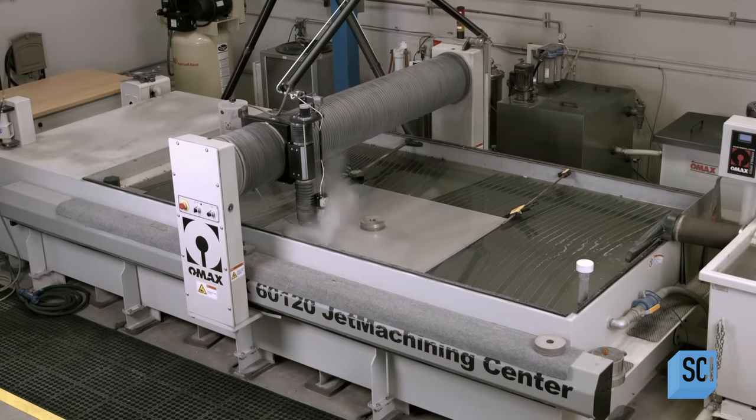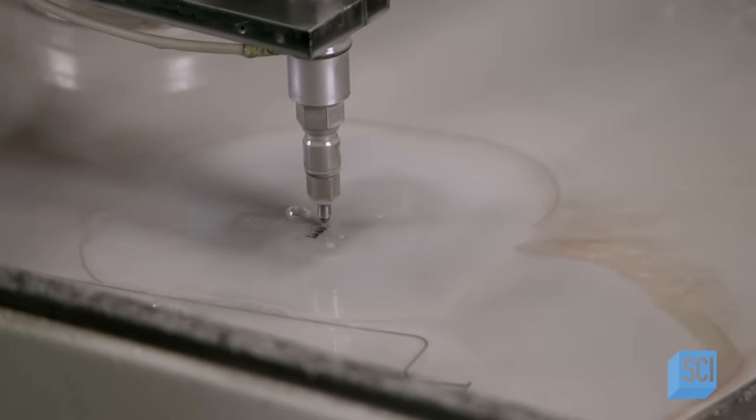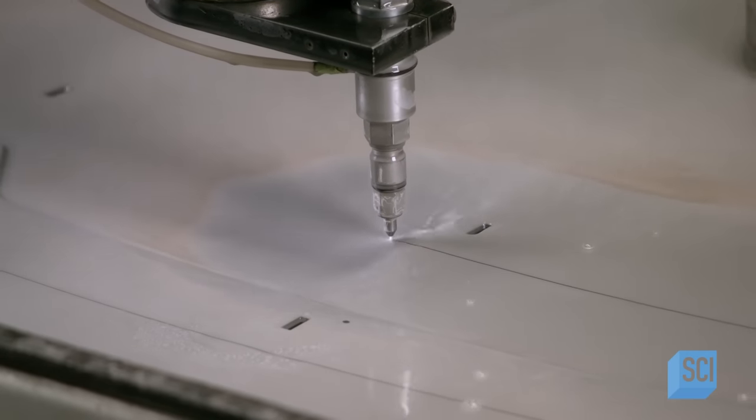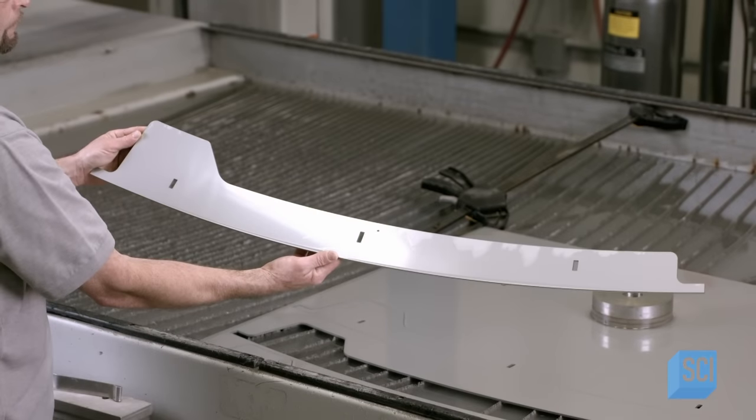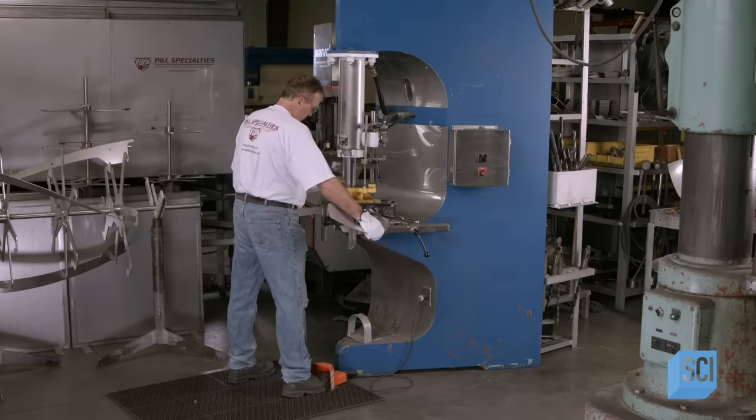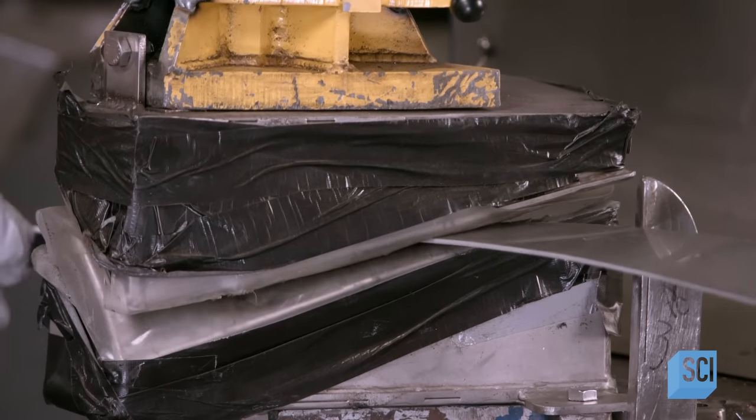This high-pressure water jet cutter also cuts parts from stainless steel sheets. This component is one of six flights, which is part of the paddle that lifts and mixes the beans inside the roast chamber so that they roast evenly. To form the flights to the required shape, a worker curves them one at a time in a press.